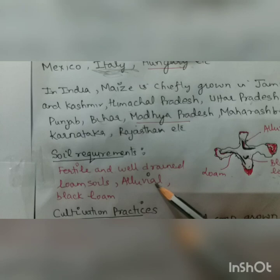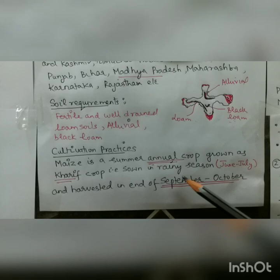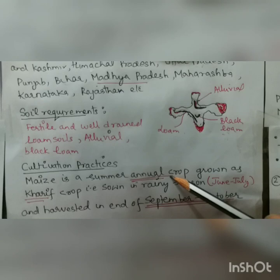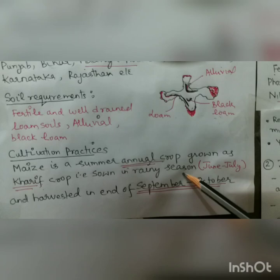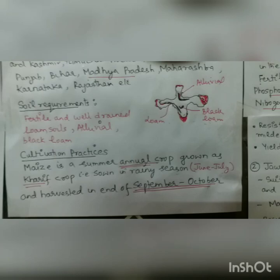Now coming to cultivation practices: maize is an annual crop — meaning every year we have to grow it — and it is a kharif crop. Kharif crops are grown in the rainy season, June and July, and harvested in September and October.